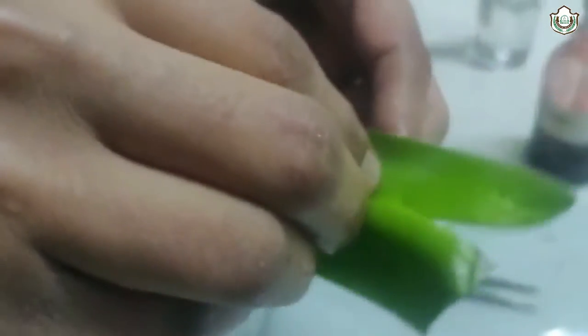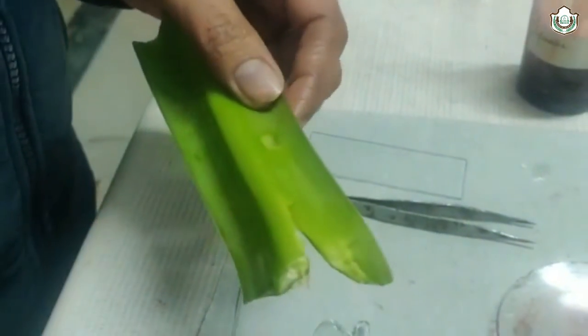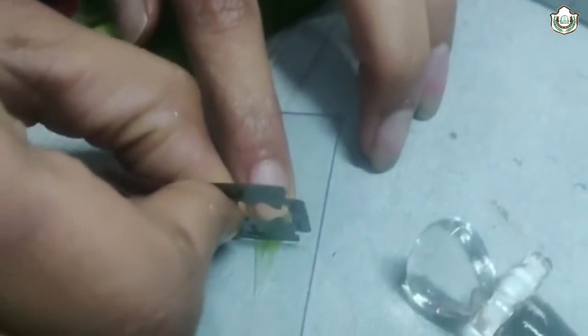First of all, we have to take the peel. Take the peel and cut it with the help of scissor or blade in square shape.